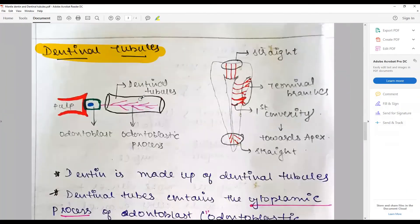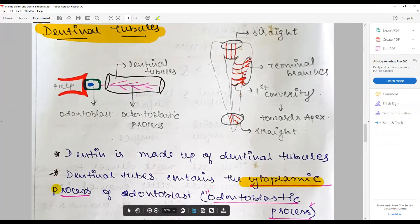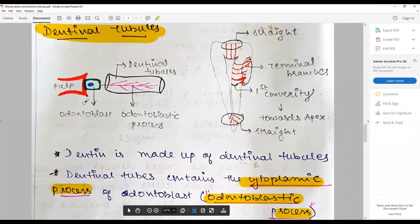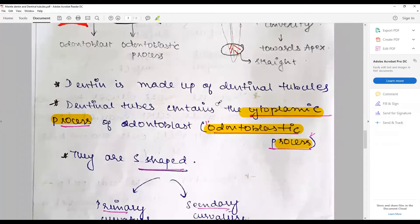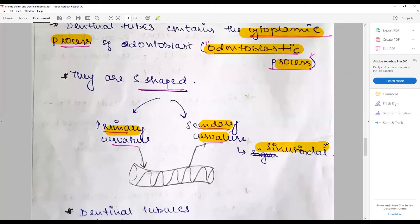Dentinal tubules are the functional units of the dentine. The dentine is made up of numerous dentinal tubules. They contain cytoplasmic extension or process of the odontoblast called odontoblastic process. They are traditionally said to be S-shaped with a primary curvature and secondary curvature.